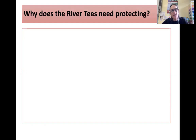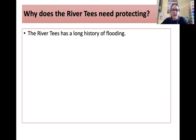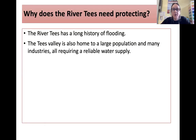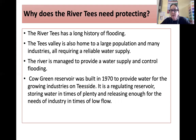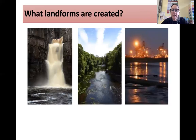Why does this area need protecting? It's got a long history of flooding. It's home to a large population of people and lots of industries, all requiring a reliable supply of water. It's managed to provide a water supply and control flooding, and the Cow Green Reservoir was built in 1970 to provide water for the growing industries on Teesside. It's a regulating reservoir, storing water in times of plenty and releasing enough for the needs of industry in times of lower flow.